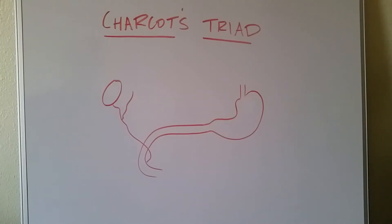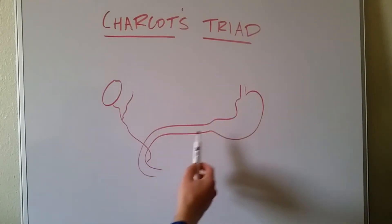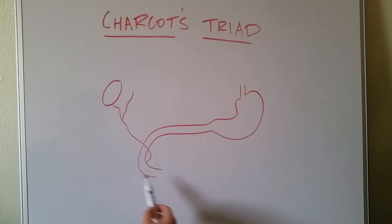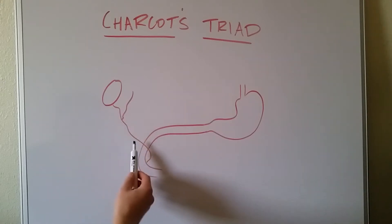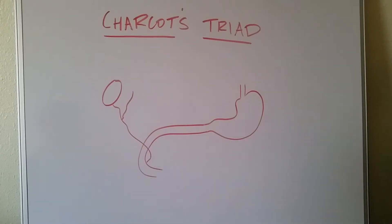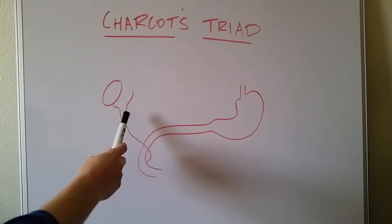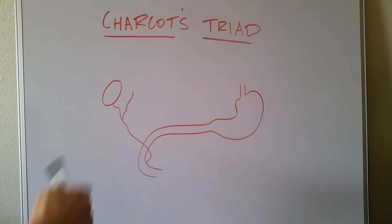We're going to start with what ascending cholangitis is. I drew up here some anatomy for you. We have the esophagus, stomach, duodenum, and then here we have the common bile duct coming down to the ampullae of Vater. This circle up here in the top left is going to be the gallbladder. You can see the hepatic duct coming down to join the cystic duct.